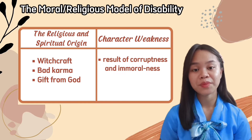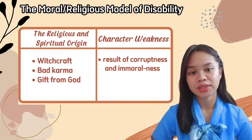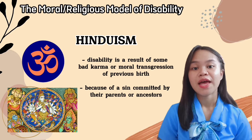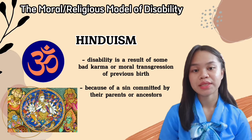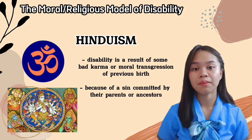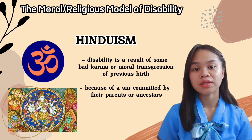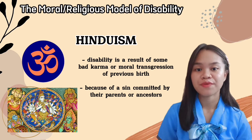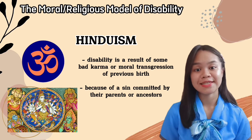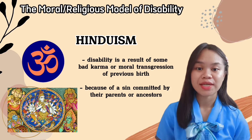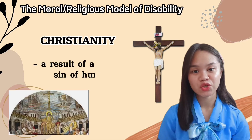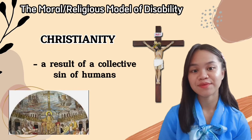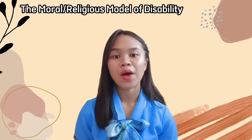The second part is under character weakness — it is a result of corruptness and immoralness. Some religions like Hinduism believe that disability is a result of bad karma or moral transgression of a previous birth. Sometimes the possible cause is considered a sin committed by the person's parents or ancestors. In Christianity, it is explained as a result of the collective sin of humans.